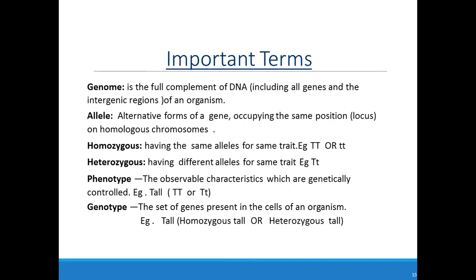Important terms related to Mendel's laws: Genome is the full complement of DNA. Allele refers to alternative forms of a gene that occupy the same position on homologous chromosomes. Homologous chromosomes means one is acquired from the father and one from the mother. Homozygous condition is when both chromosomes carry the same alleles — for example, TT or tt. Heterozygous means having different alleles for the same trait — for example, Tt.